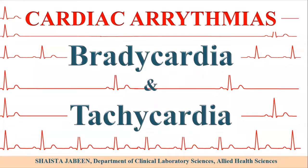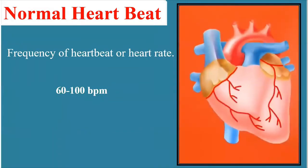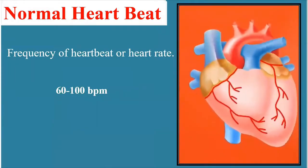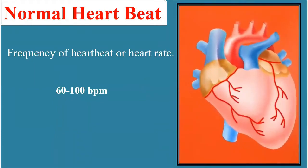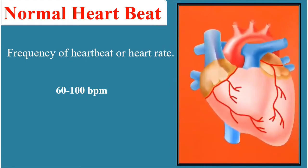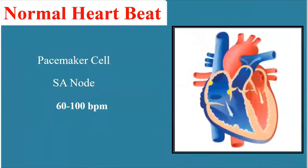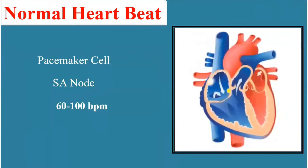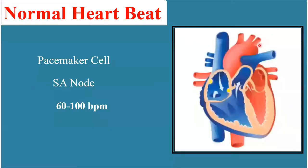Let's first briefly look at the normal heartbeat. The rate of the normal heartbeat is 60 to 100 beats per minute. This normal heartbeat, as discussed in the previous video, is controlled by the pacemaker cell known as the sinus node. Any abnormality or irregularity in the rhythmicity of this heartbeat may lead to different arrhythmias of the heart.